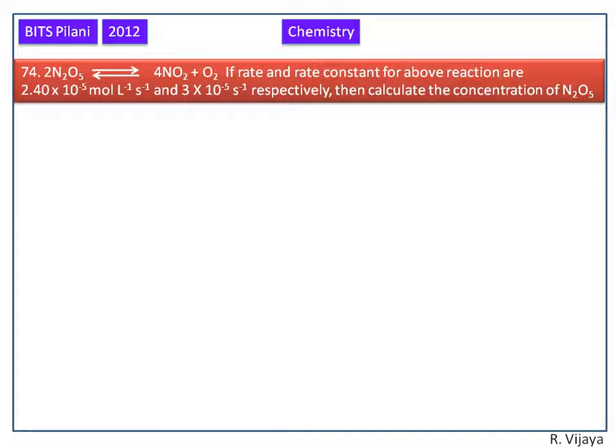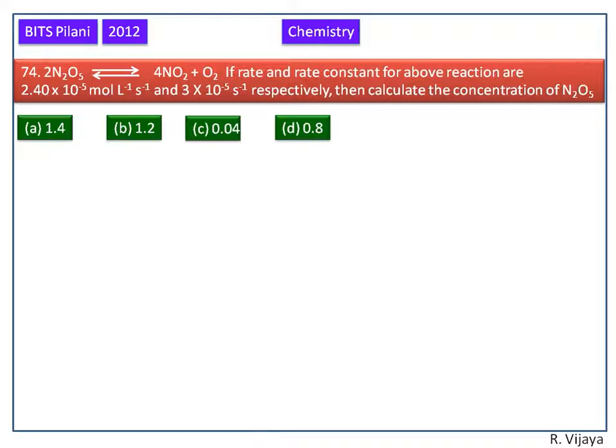The decomposition of N2O5 gives NO2 and O2. If rate and rate constant for the above reactions are 2.4 × 10⁻⁵ mol per liter per second and 3 × 10⁻⁵ per second respectively, then calculate the concentration of N2O5. The options are shown here.